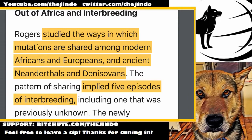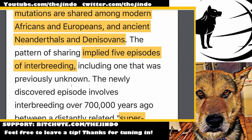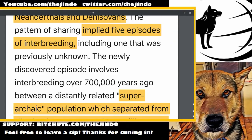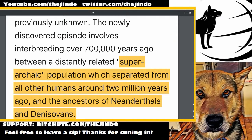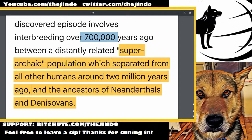How does this affect out of Africa and interbreeding? Rogers, the evolutionary geneticist involved in this study, took a look at mutations shared among Africans, Europeans, ancient Neanderthals, and Denisovans — those four groups. He found a pattern implying five episodes of interbreeding: confirming four and discovering one previously unknown. The newly discovered episode involves interbreeding over the 700,000-year-ago boundary.